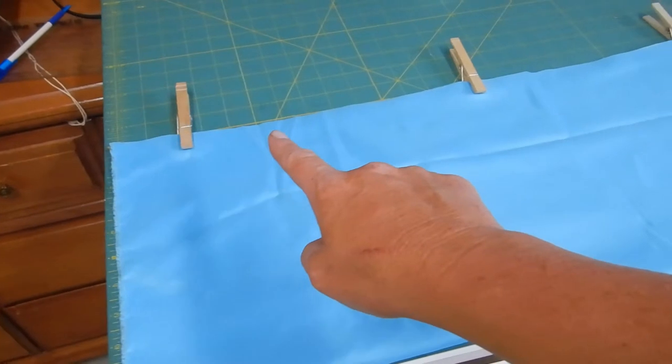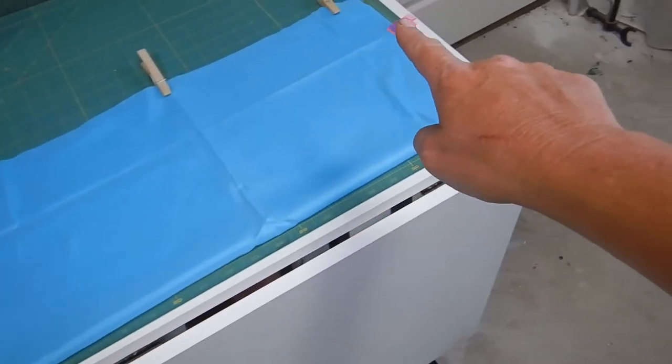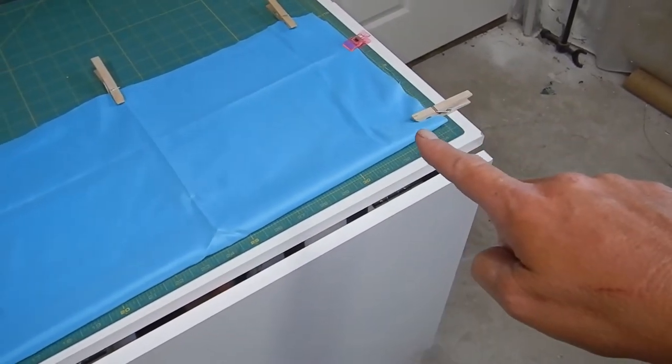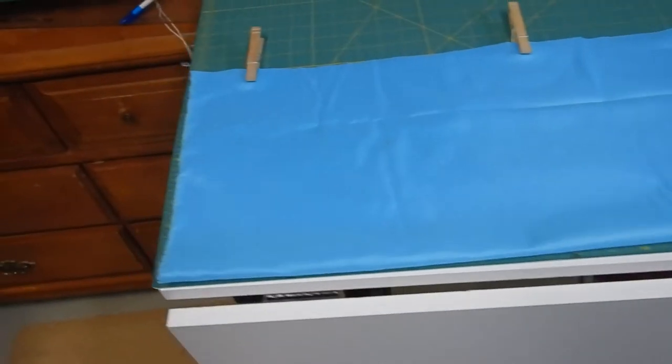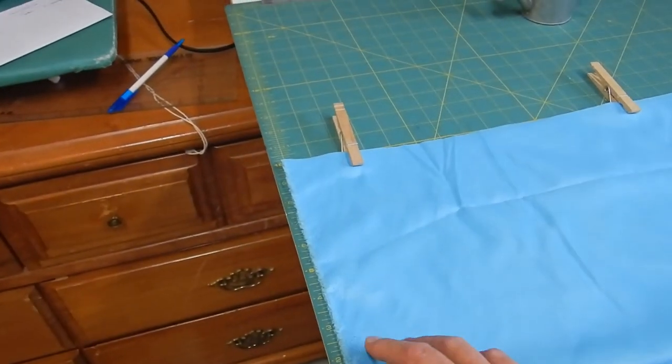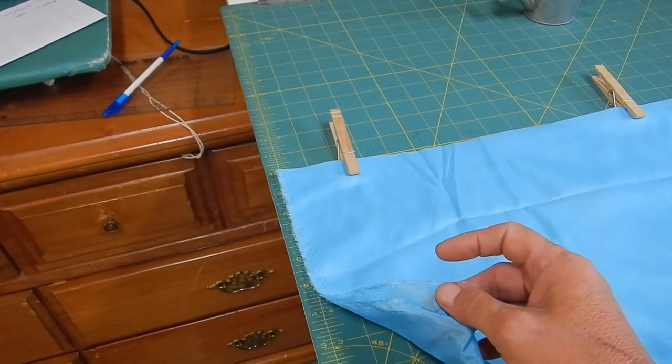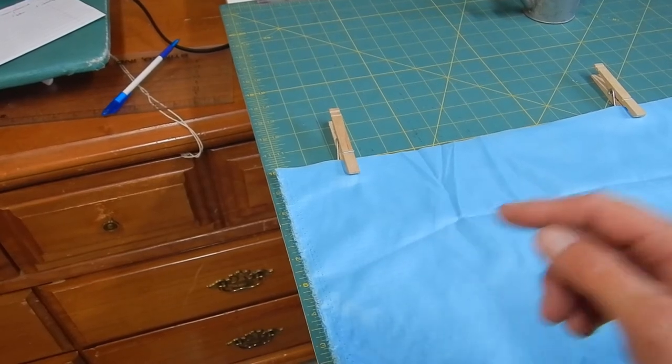I'm going to be sewing along this edge and then this will be the bottom right here. I'm going to have the selvedge edge be the top where I will put the casing, the drawstring for the bag.